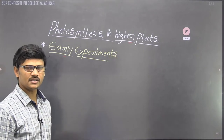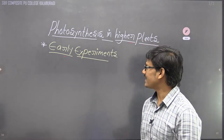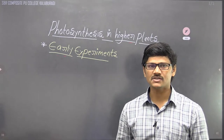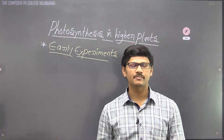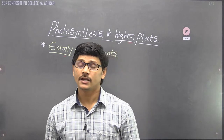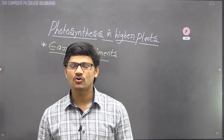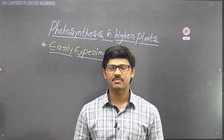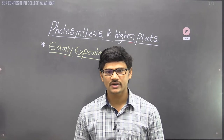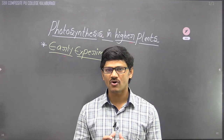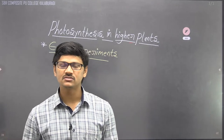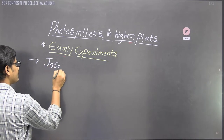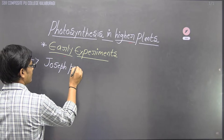There are various scientists who conducted different kinds of experiments in the field of photosynthesis. For our syllabus, the scientists covered are Joseph Priestley, John Ingenhousz, T.W. Engelmann, Julius von Sachs, and one milestone experiment conducted by Cornelius van Niel. We will discuss the contributions of all these scientists.